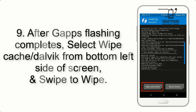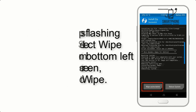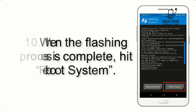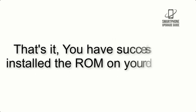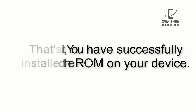Step 9: After GApps flashing completes, select Wipe Cache and Dalvik from the bottom left side of the screen and swipe to wipe. Step 10: When the flashing process is complete, hit Reboot System. That's it — you have successfully installed the ROM on your device.